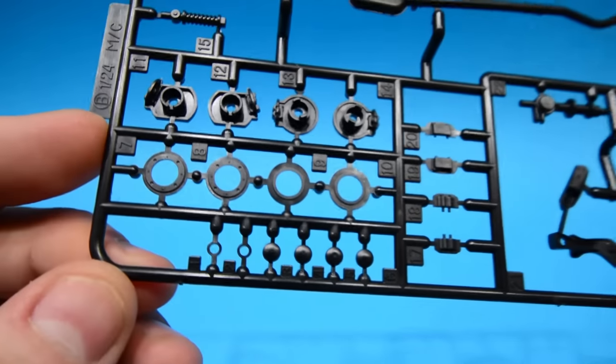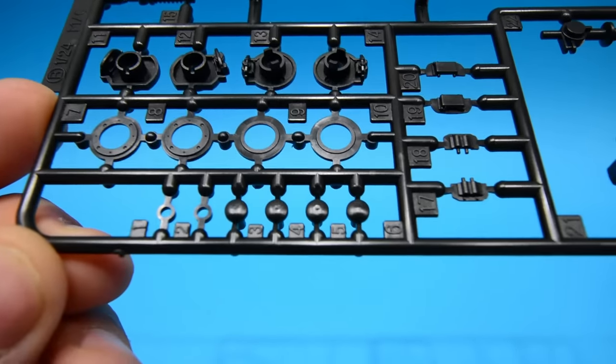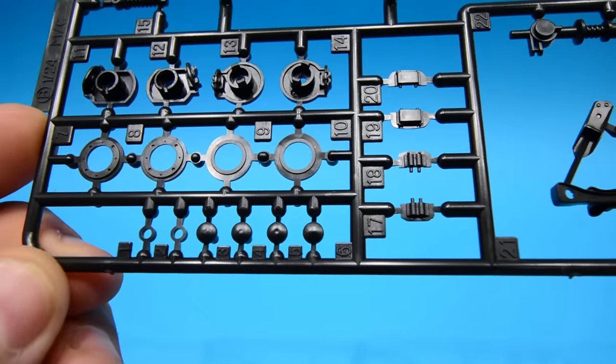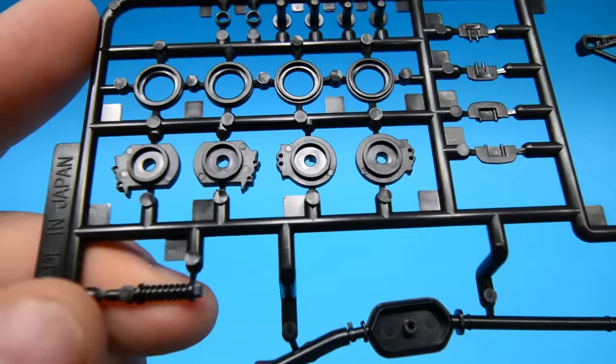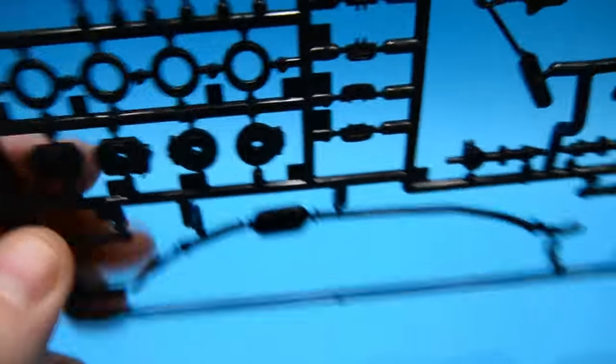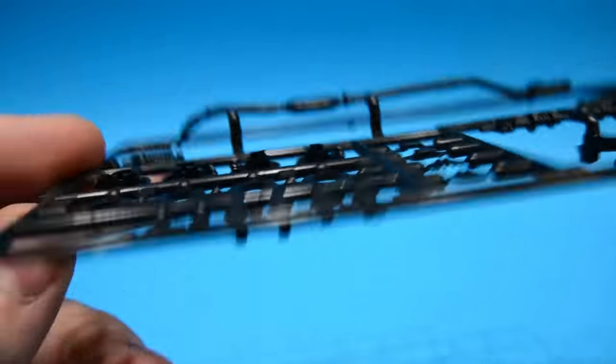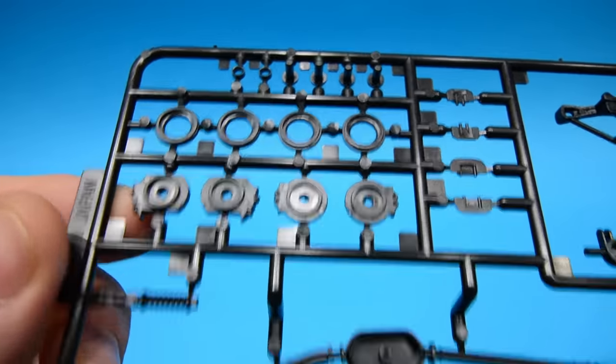Second to last sprue then. This has some chassis pieces on. Some brakes. Again I'm not entirely sure what every single one is but the brakes are nice. So they're in two pieces. Ah that's what they are. Ah ha. We have separate calipers there. How often does that happen? I'm loving this.